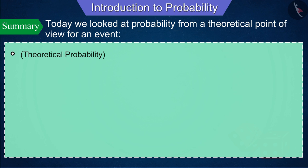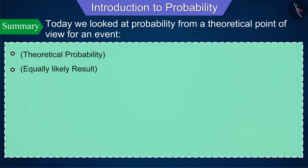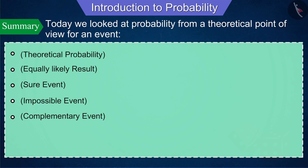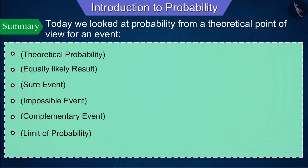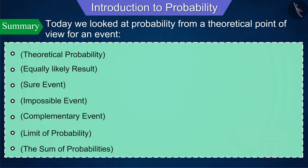Hopefully you now have a good understanding of probability. Today we looked at probability from a theoretical point of view, covering: theoretical probability for an event, equally likely outcomes, sure event, impossible event, complementary event, the limits of probability, and the sum of probabilities.